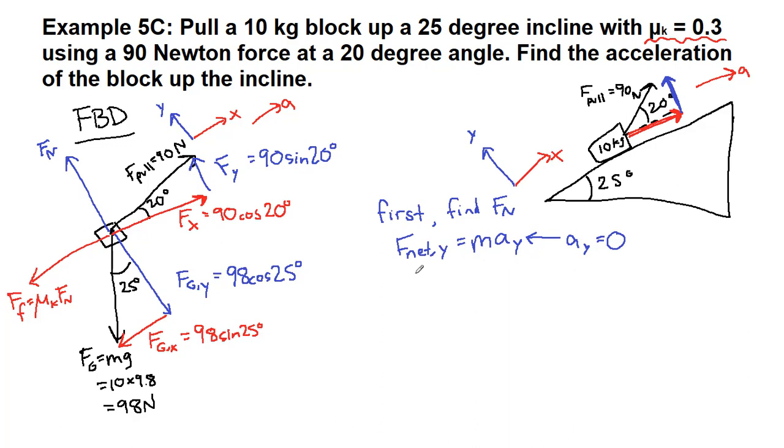So because it's zero, we can write everything equal to zero and focus on things that point in the same direction will have the same sign and things that point in the opposite direction will have an opposite sign. So here we have the normal force plus 90 sine 20 degrees minus 98 cosine 25 degrees. And all of that came from our beautiful map, the free body diagram.